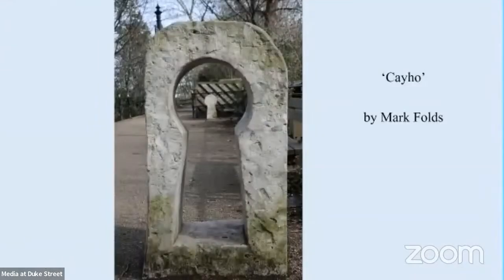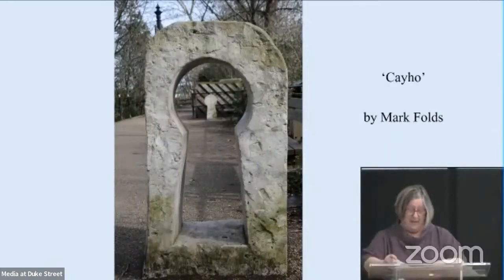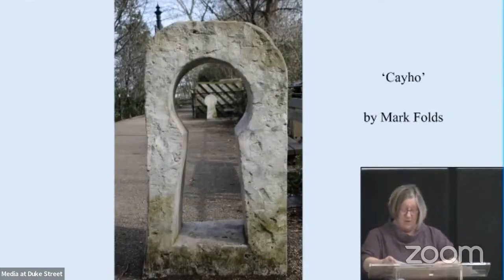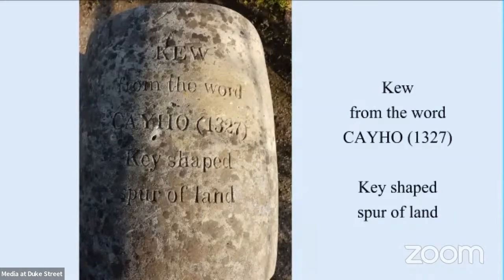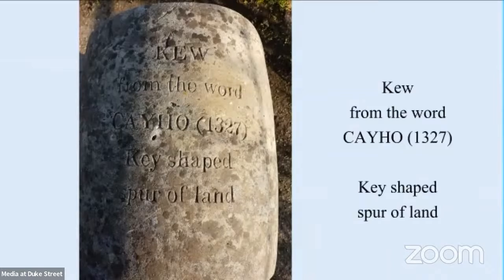Our first slide is entitled 'Cahoe' and it sits just to the east of Kew Bridge on the towpath by Kew Pier. It was unveiled in April 2000 and consists of two separate pieces made of Portland stone with a hand-carved inscription on the rounded piece. The inscription reads: 'Kew — from the word Cahoe, key-shaped spur of land.' One part is in the shape of a keyhole and the second part, with the inscription, is the key. Although this sculpture is modern, it takes us back to medieval times when Kew, or Cahoe, was just a small collection of fishermen's cottages and farmland.